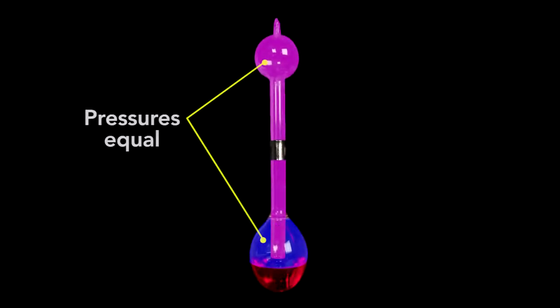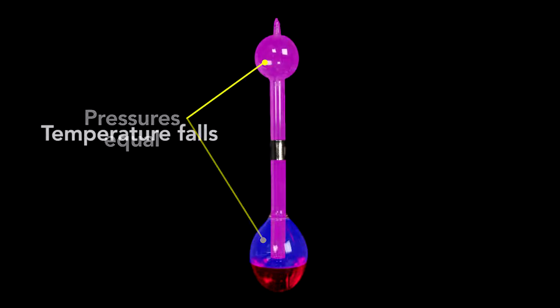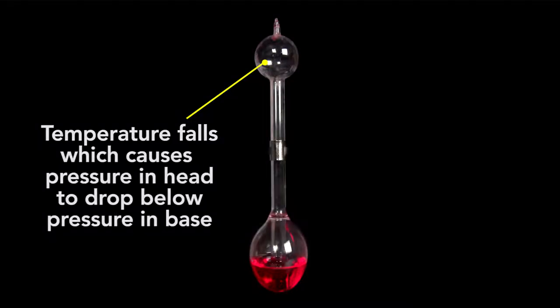So at rest the pressure in these two spaces are equal, but when the bird's beak is wet, the temperature falls, and as I'll explain in a moment, the pressure in the head drops below that in the base and the liquid rises.